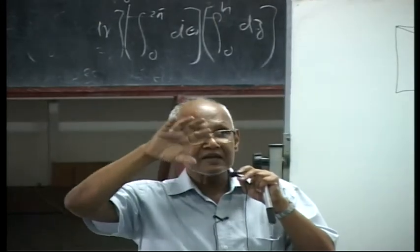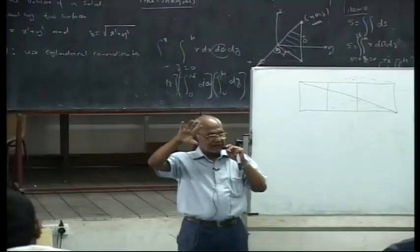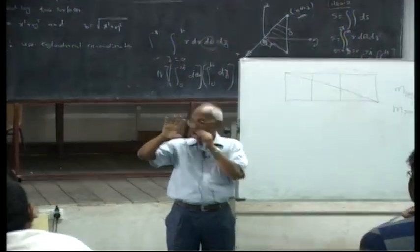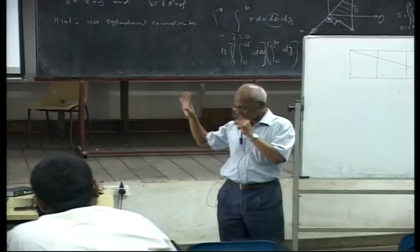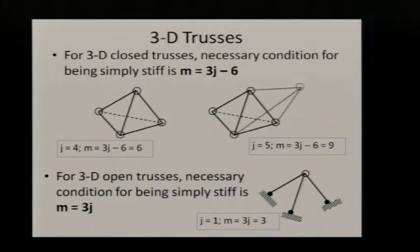So when you add a new joint to a tetrahedron, which itself has four joints and six members. Can you see? You can imagine that this is the base of it. So you have one, two, three members at the base and vertically, you have another three members, six members and four joints. So m equals six, j equals four.